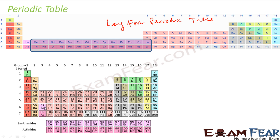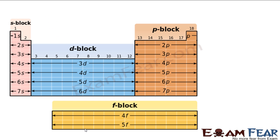We have atomic number 57 here, and then from 58 you start lanthanides, and then actinides from 89 — actinium 89 and then thorium 90. There's a connection: this part is just squeezed down. Now if you see this periodic table, this part is my D block and this part is my F block.